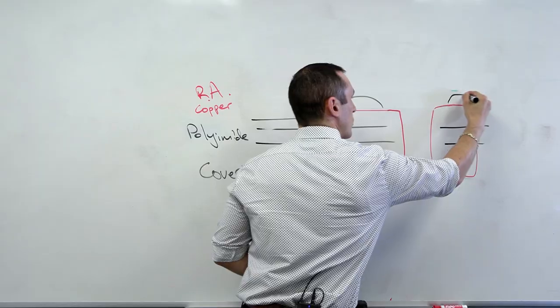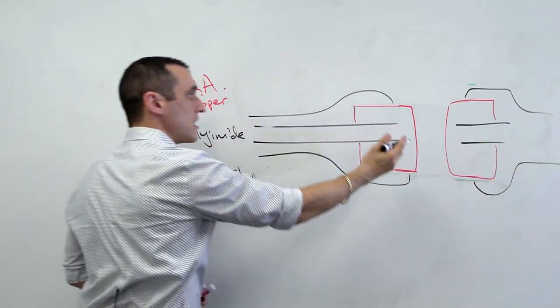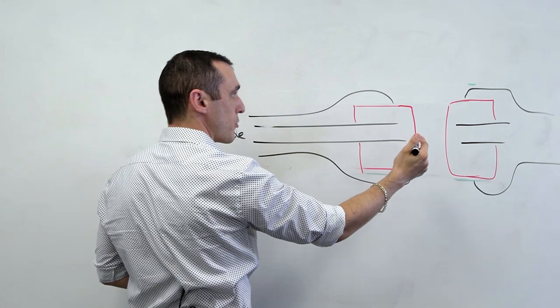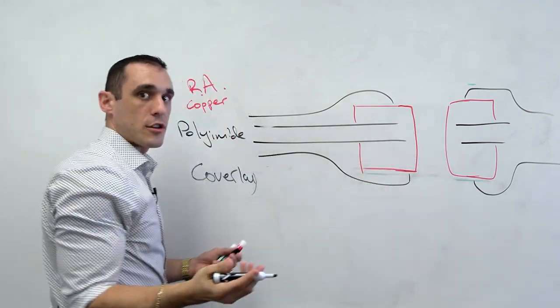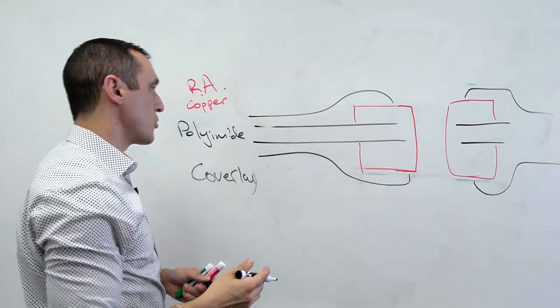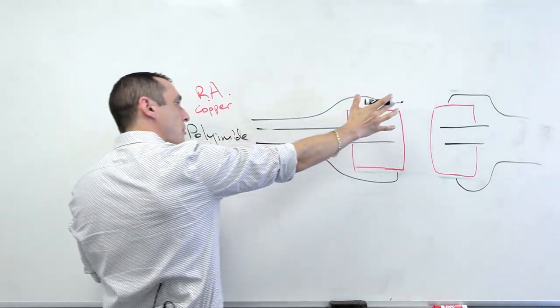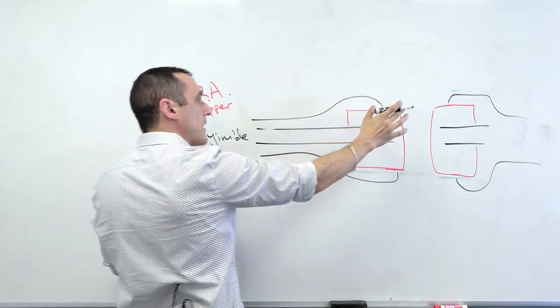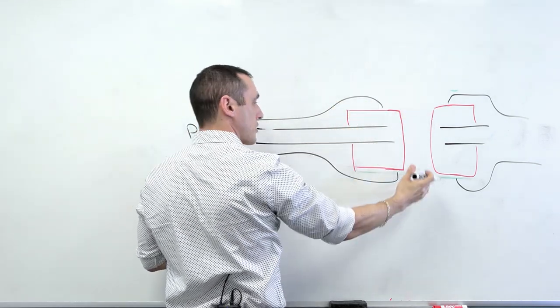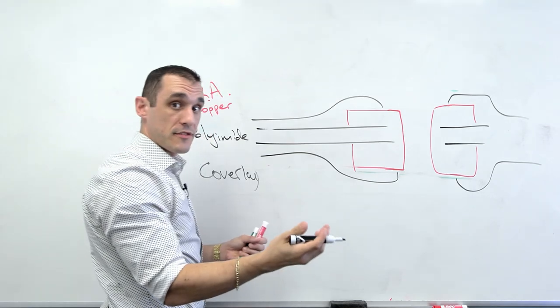And then the last step is to apply this cover lay over everything. And this cover lay will leave open any holes that we need to access points on the circuit board so that we can again solder or maybe access things for test points, whatever else we need to do. And you'll notice that there's this opening here in the top. This top opening for the cover lay then allows you to then insert a component, solder it and assemble this flex PCB.